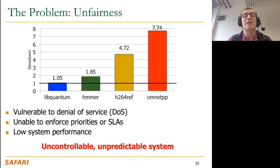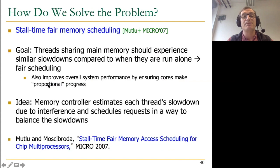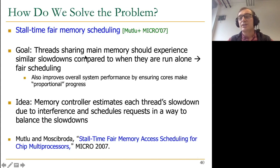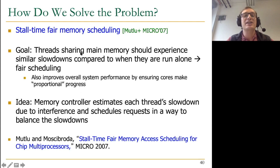Remember the picture showing unfairness in the memory system — the memory controller is unfair, some applications slow down a lot, some by little, resulting in an uncontrollable, unpredictable system. Our first solution was called stall-time fair memory scheduling. The goal is to have threads sharing main memory experience similar slowdowns compared to when they're run alone on the same system. That's the definition of fair scheduling in this case. This improves overall system performance by ensuring cores make proportional progress. The question is how to implement this goal, and it turns out to be very difficult.